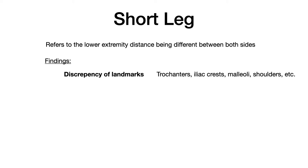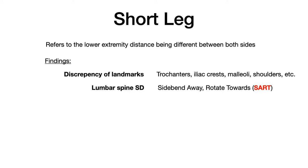The next finding is somatic dysfunction in the lumbar spine. The classic finding is side bending away and rotating towards the side of the short leg — SART for short: Side bend Away, Rotate Toward. This is very high yield. Test questions will give you a whole array of structural exam findings across the spine, and you need to recognize the lumbar SART pattern to deduce that there's a short leg on one side. Don't overlook that finding.